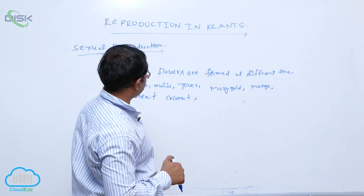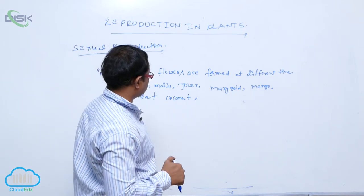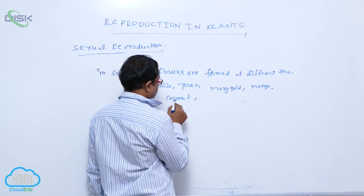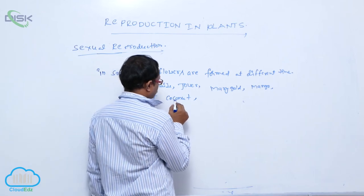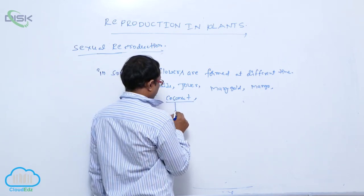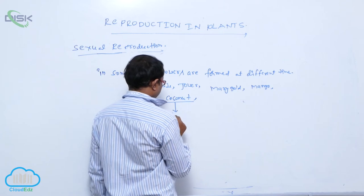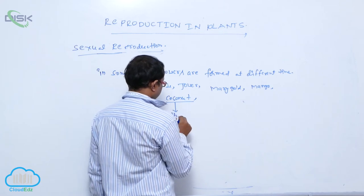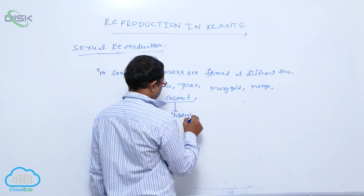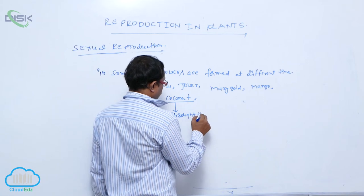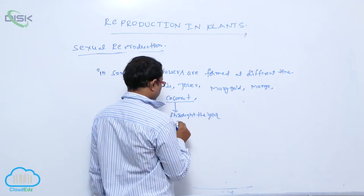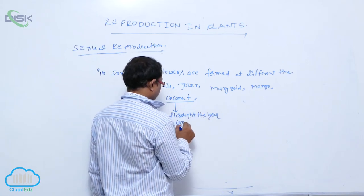In rice, maize, jawa, wheat, and coconut, flowers are formed continuously throughout the year.